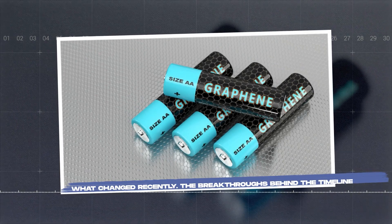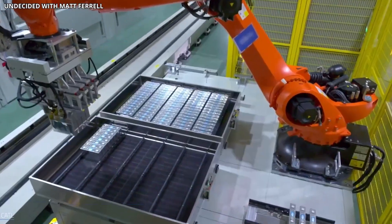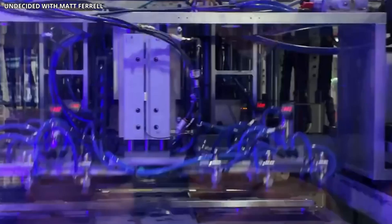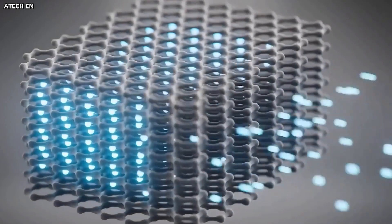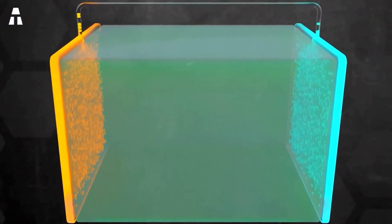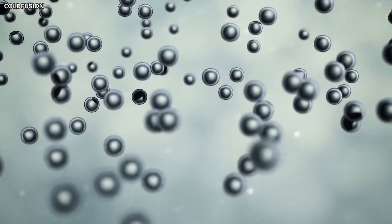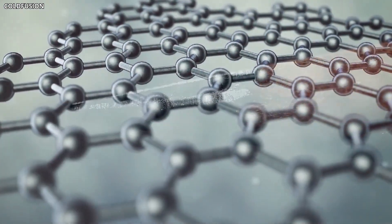What changed recently? The breakthroughs behind the timeline. Several advances in the last few years made commercialization realistic. The first is scalable production. New methods like liquid exfoliation and plasma-based synthesis have drastically reduced the cost of making graphene. These techniques can produce large quantities of high-quality material without the expense of older methods. Production costs have dropped to the point where graphene can compete with existing battery materials, at least in premium products.